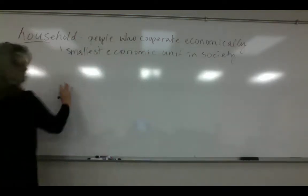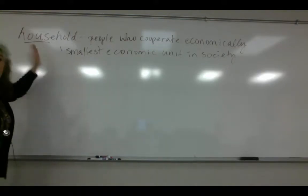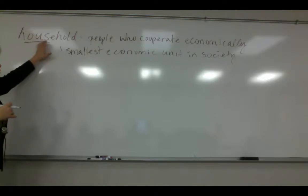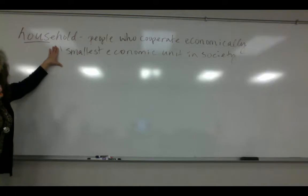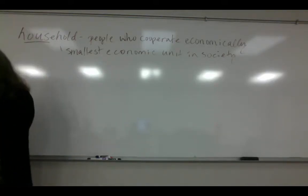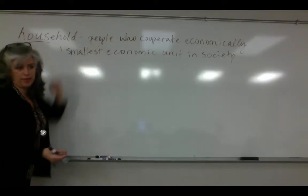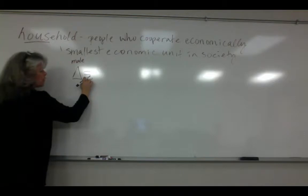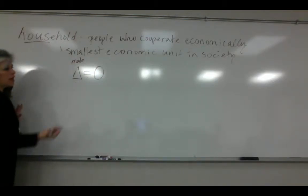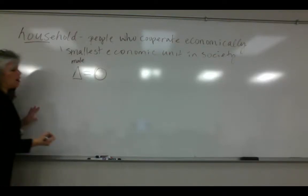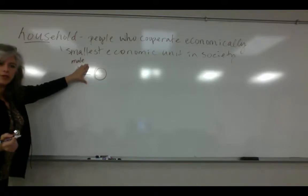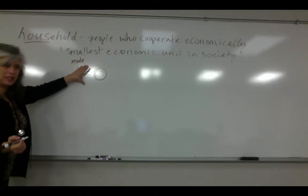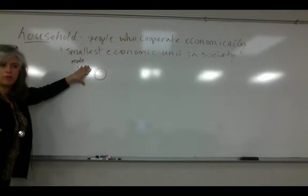A triangle represents a male and a circle represents a female. The equal sign represents a sexual union — you can call it a marriage, but marriages don't exist everywhere in the world, whereas sexual unions do. In Yanomami culture, men have multiple wives, so here is a man with one woman married to him and another woman married to him, each potentially having his children.